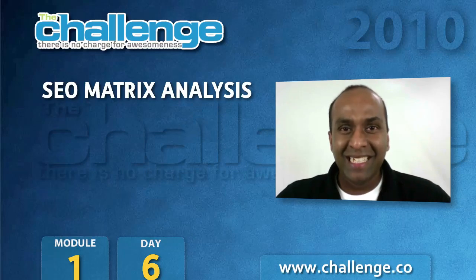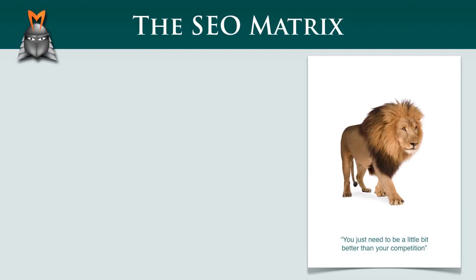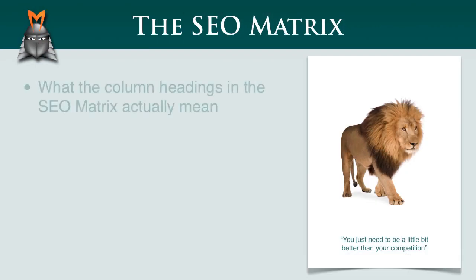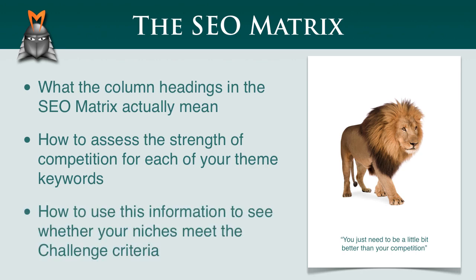Hi again everyone. In today's video, we'll be using Market Samurai to investigate the strength of the competition in each of the niches that you're currently investigating. Specifically, we'll be covering what the column headings in the SEO matrix actually mean, how to assess the strength of competition for each of your theme keywords, and how to use this information to check if your niches meet the challenge criteria.